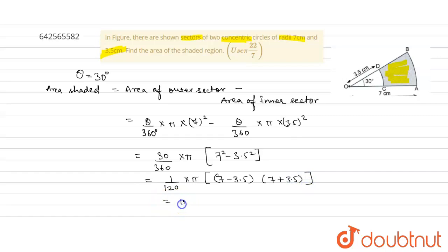It will be pi by 12 into 10.5 into 3.5, which will be equal to 9.625 centimeter square as a final answer.